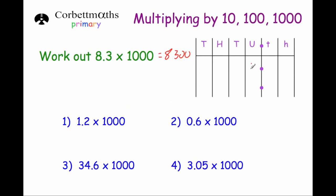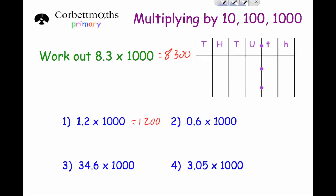For 1.2 times 1000: move all digits three columns to the left, then put in the zeros — the answer is 1,200. For 0.6 times 1000: the 6 moves three columns to the left, giving 600. And for 34.6 multiplied by 1000: the 3 moves from the tens column into the ten-thousands, the 4 moves from units into thousands, and the 6 moves from tenths into hundreds. Adding two more zeros as placeholders gives the answer 34,600.